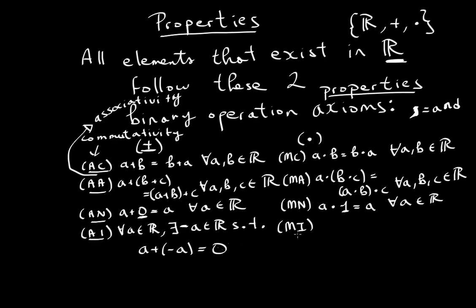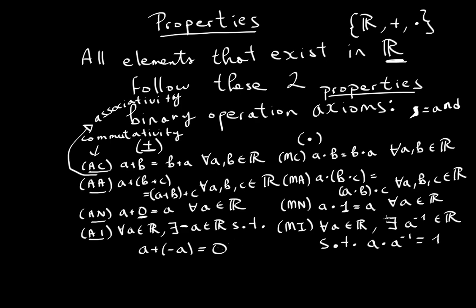The last multiplicative axiom is multiplicative inverse: for all A in the reals, there exists an A inverse also in the reals, such that A times A inverse equals one. You can see the commonality between addition and multiplication — both have commutativity, associativity, a neutral element, and an inverse.